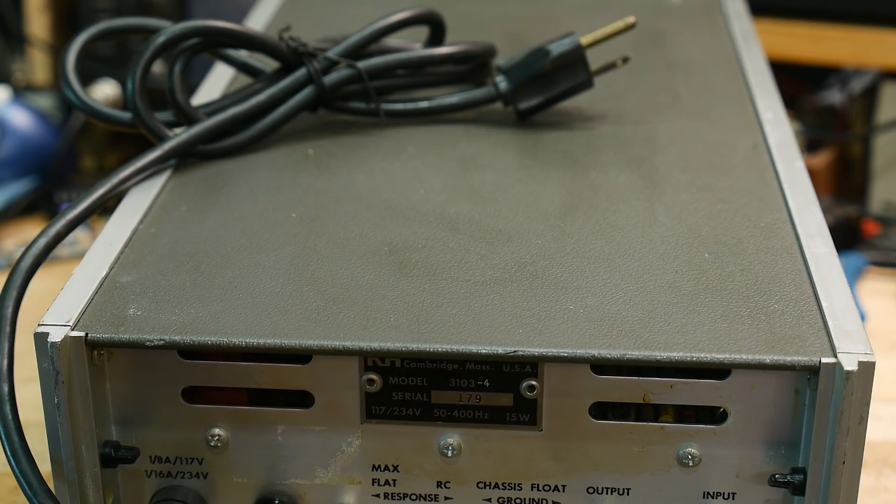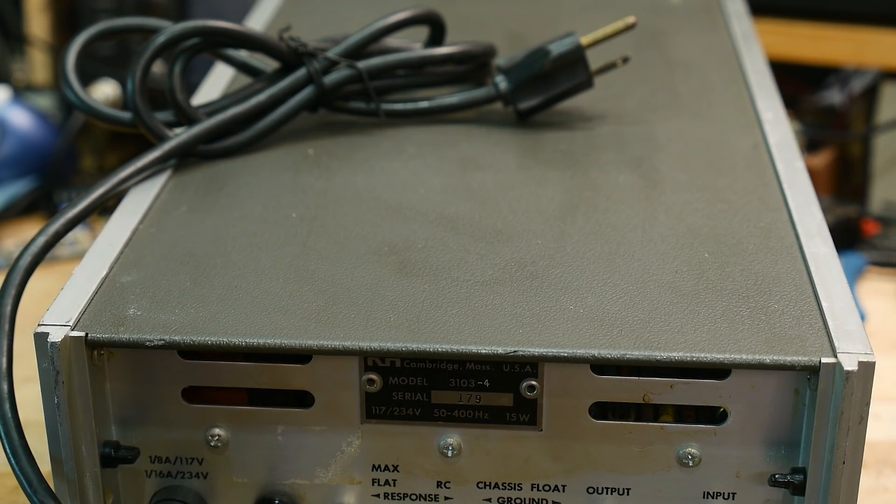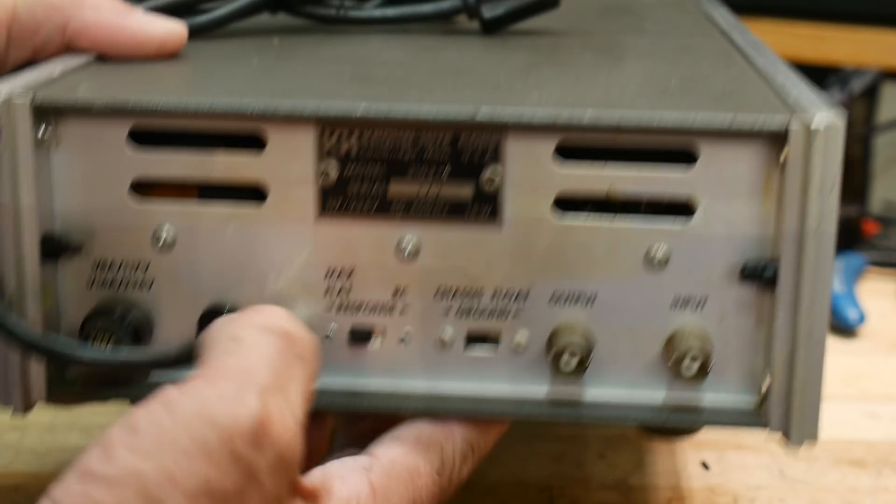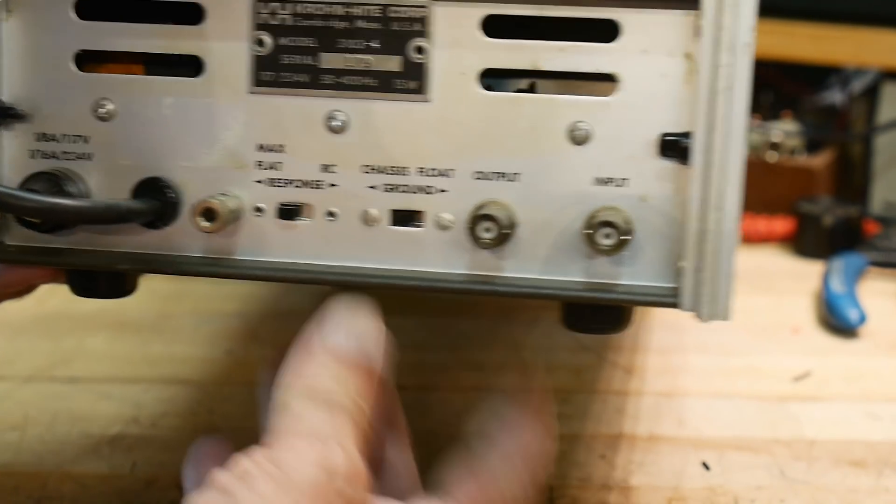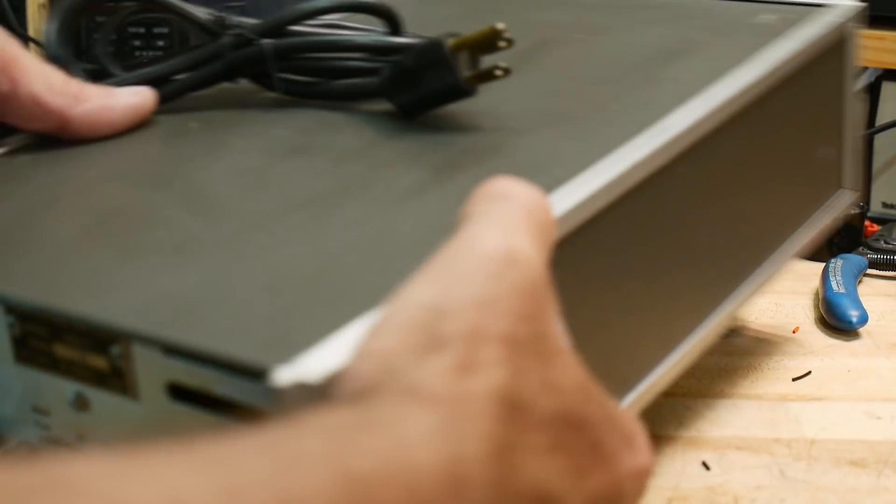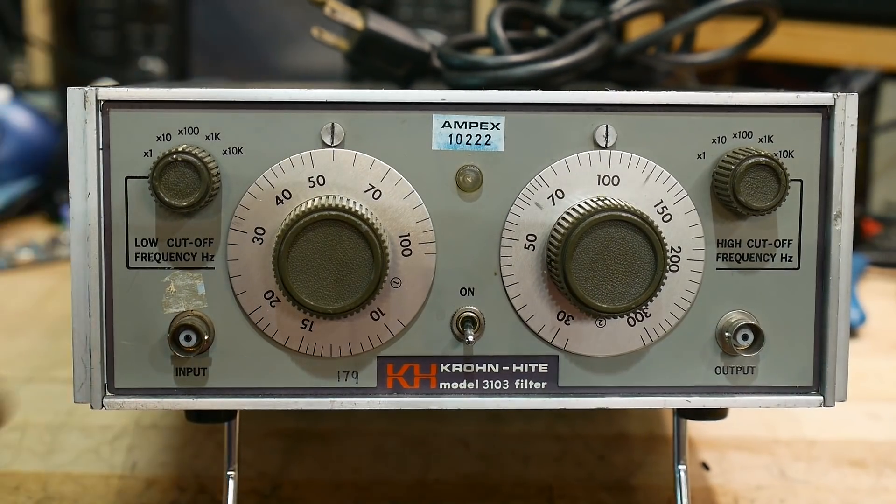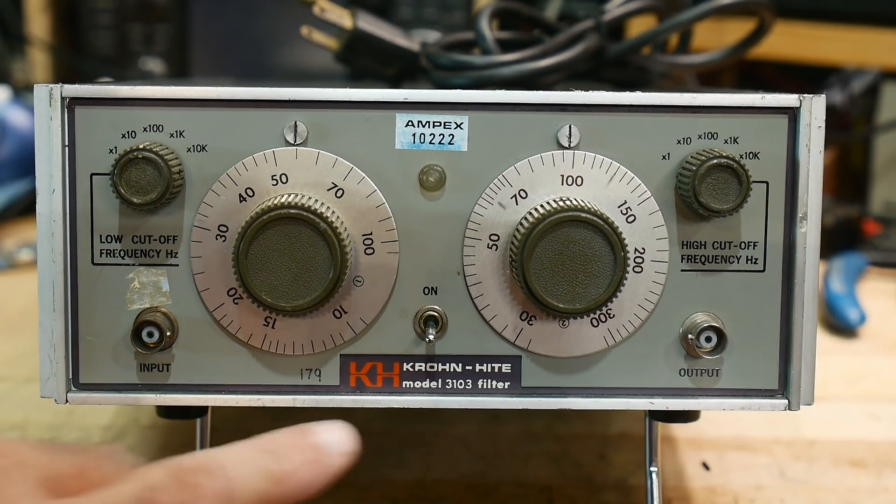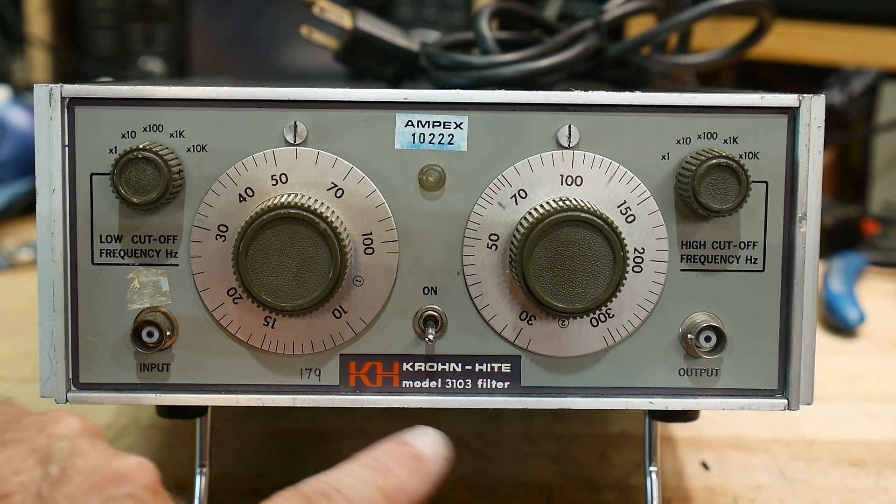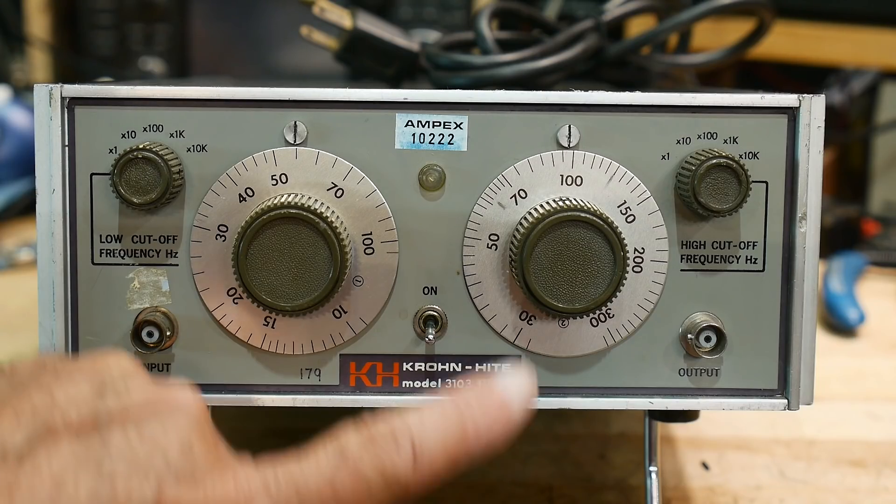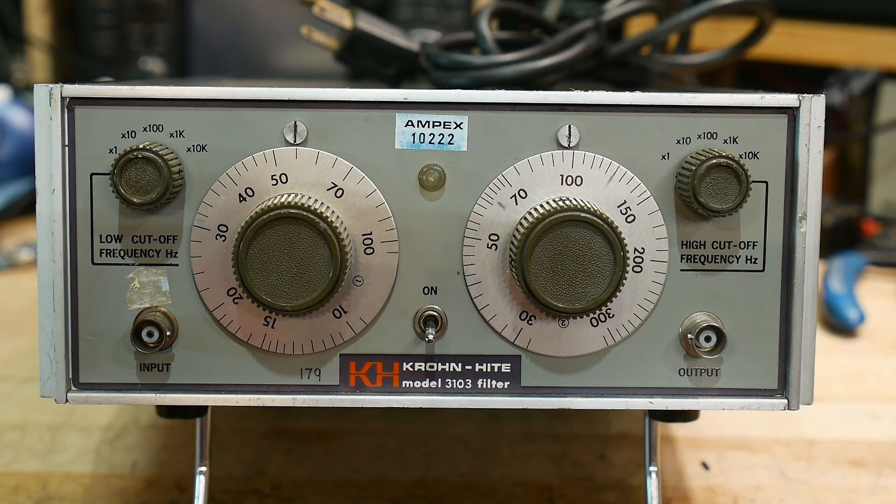So maximally flat is going to be a Butterworth filter, an RC response. I don't know what kind of filter that's going to be. So one's going to be sharper than the other, I think. So 110 volts, one eighth of an amp, so it doesn't take much. And let's see, it is a Krohn-Hite Model 3103. So I know there are schematics online. I checked that before. Before I buy anything, I make sure I can get schematics.